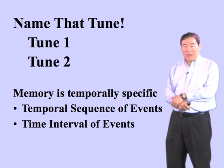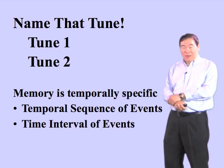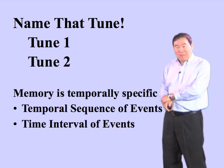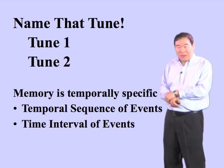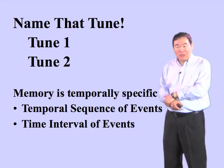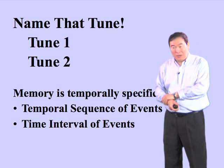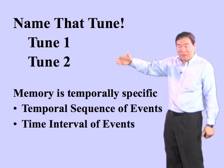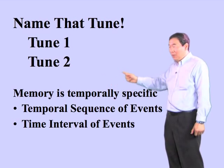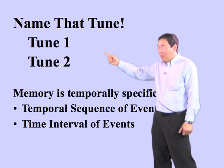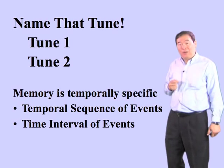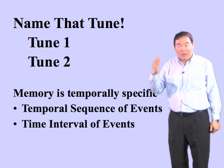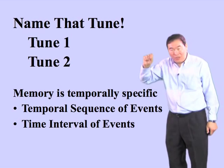When we learned this tune in our childhood, our memory for this tune is temporal-specific — we remember the sequence. Like many other memories in life, the temporal sequence of events is very important. We also remember the interval between the notes — the time interval of events. So we have two aspects of this sequence: the temporal sequence from beginning to end, and the time interval, which is the same in both tunes.